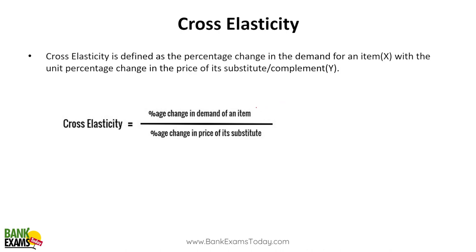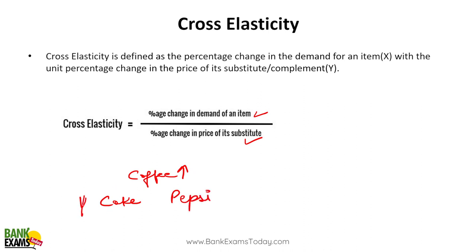Cross elasticity is percentage change in the demand of an item divided by percentage change in price of the substitute. For example, if the price of coffee rises, people would be buying more tea — they will switch from coffee to tea. Coke and Pepsi are very good examples: if the price of Coke increases, a lot of people are going to buy Pepsi. That is cross elasticity of demand: percentage change in the demand of an item in case there is a change in price of its substitute.